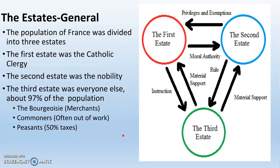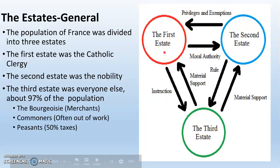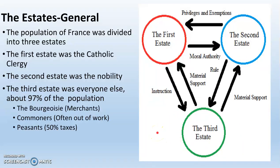The Estates General is the legislative body of France in this time period. The population of France was divided into three estates. The first is the Catholic clergy — not the Protestants; they only care about the Catholics. The second are the nobles. The third is everyone else — that is 97% of the population. The bourgeoisie, the rich merchants and traders, the commoners, the peasants, everybody else is in the third estate.